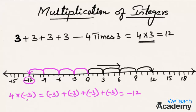Since we are multiplying with minus 3, we are moving towards the left side on the number line. In the same way, if you are multiplying with a positive integer — that is, 4 times 3 — we are moving towards the right side of the number line.